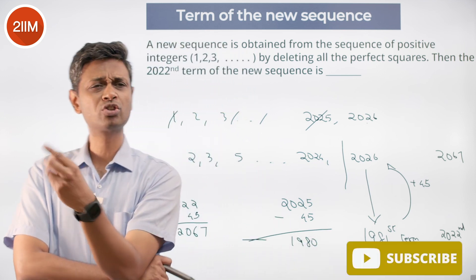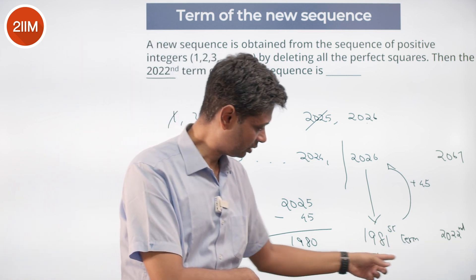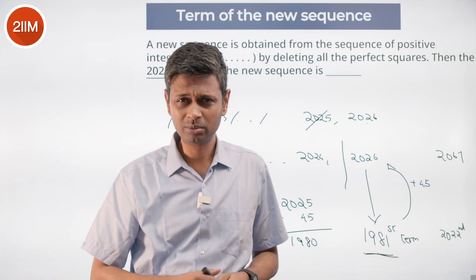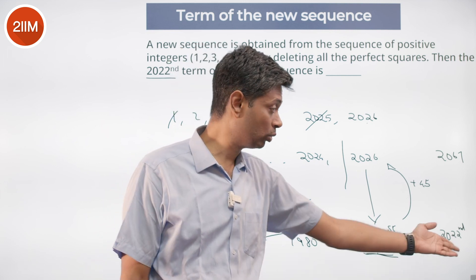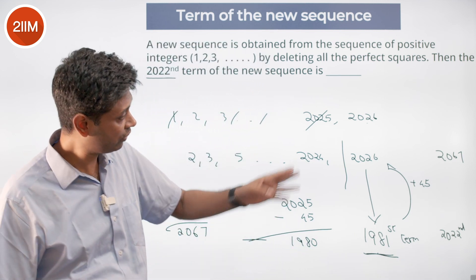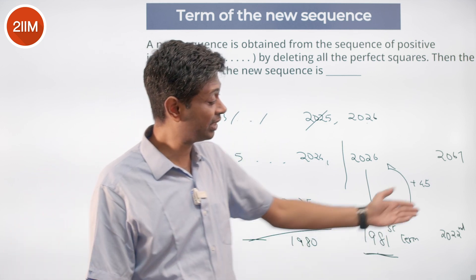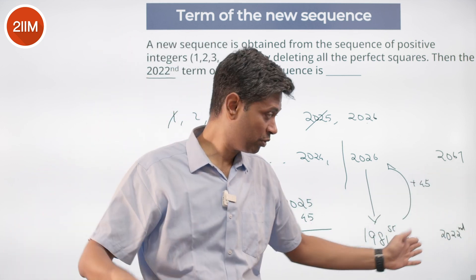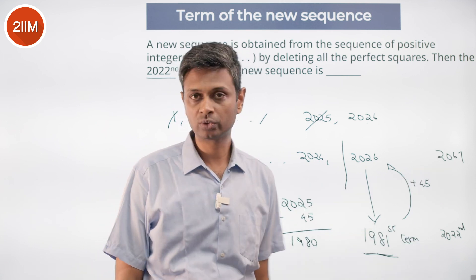I find the closest square to 2022 such that this number below 2022 is a square number. After this, I don't skip any other number till I go to the 2022nd term. 46² is very large. 45² plus 1 will be here. 46² plus 1 will be another 90 or 91, so far away, not before 2022. So the 2022nd term will be 2067.